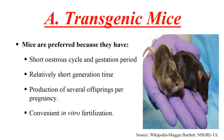Next, let's discuss transgenic mice. Mice are generally preferred because they produce a large number of offspring per pregnancy, have a short generation time, a short estrous cycle and gestation period, and are very convenient for in vitro fertilization. That is why mice are generally preferred for research.